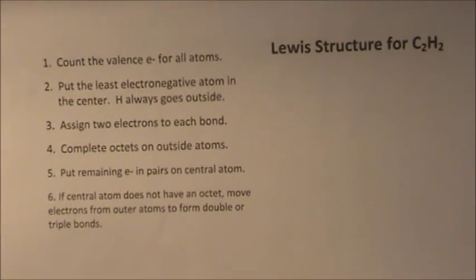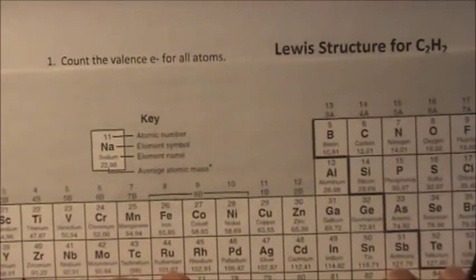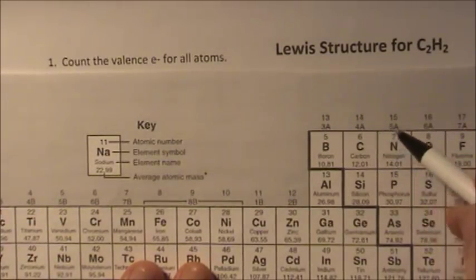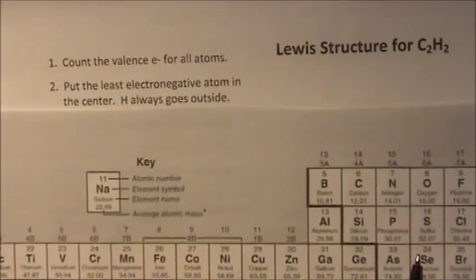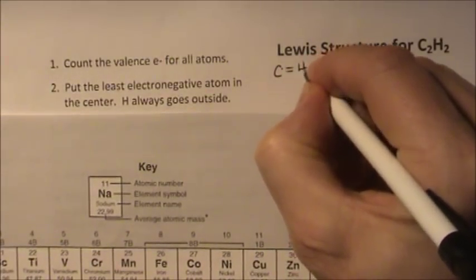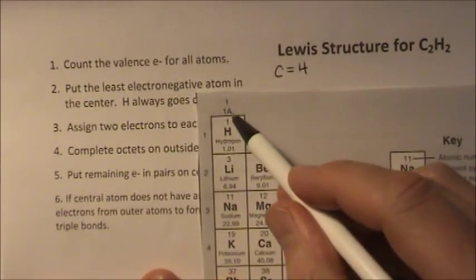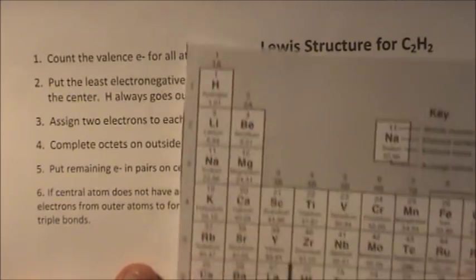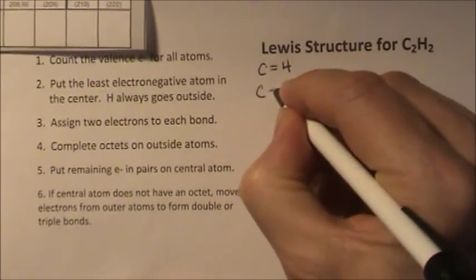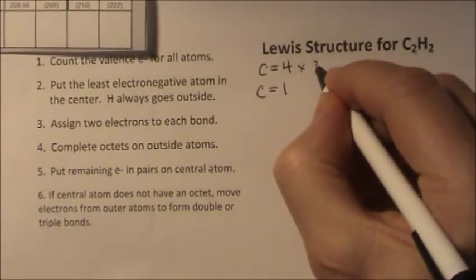So, first thing we need to do, count those valence electrons for C2H2. We have a periodic table. Carbon is in group 14 or 4a, so it has four valence electrons. Carbon has four. Over here, hydrogen in group 1a or 1, that has one valence electron. But since I have two carbons, let's multiply that by 2.